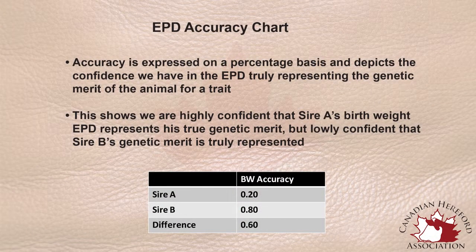EPD accuracy is a measure of the confidence we have in that animal that we are selecting upon to transmit its genetics to the next generation. EPD accuracy is provided in a value that theoretically ranges from 0 to 1 on all animals. Young animals that have no progeny will have a low accuracy value in the magnitude of 0.1 to 10%. Animals that may have one calf crop will move up possibly to the magnitude of 0.3 or 0.35. As you have animals that have been around and produced hundreds or thousands of progeny, the accuracy value for those animals will reach a magnitude of 0.8 to 0.9.